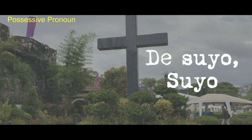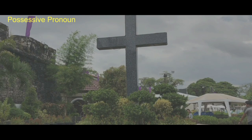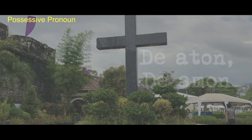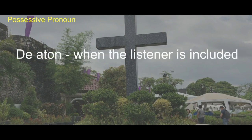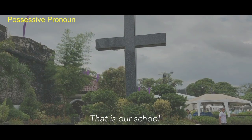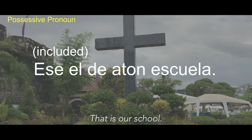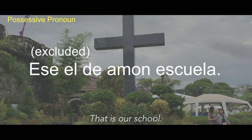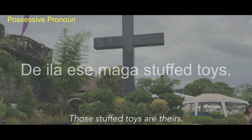De suyo and Suyo are equivalent to 'his' or 'hers' — there's no gender specific to this pronoun so you can use it for anyone. Example: 'De suyo se proyecto.' De aton and De amon are equivalent to 'ours.' De aton is when the person we're talking to is included, while De amon is when the listener is not included. Example: 'Ese el de aton escuela.' De ila is the Chavacano equivalent for 'theirs.' Example: 'De ila e se mga staff toys.'